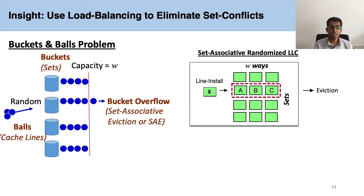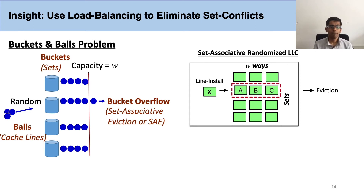Our key insight is that we use results from well-studied load balancing problems to eliminate set conflicts. We model the behavior of our randomized LLC using the buckets and balls problem. Here, balls represent cache lines and buckets with W capacity represent cache sets with W ways. When you install a line into the LLC, you evict a line. Similarly, each time we randomly throw a ball into a bucket, we remove a ball to ensure that the total balls in buckets equals the cache capacity. When a ball needs to be removed due to a bucket overflow, it is equivalent to a set-associative eviction. Our goal is to minimize these bucket overflows.